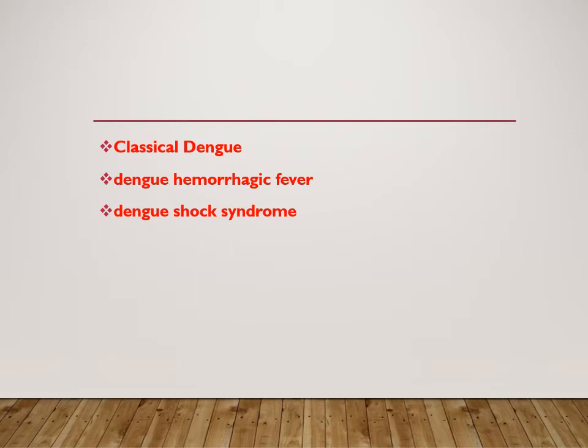In dengue hemorrhagic fever, the patient has high-grade fever, platelet count less than 1 lakh per mm³, hepatomegaly, and a raised hematocrit value — raised by more than 20 percent. There will be manifestations of hemorrhage, such as spontaneous bleeding from the nose, mouth, or gums, or a positive tourniquet test — more than 20 petechiae per square inch in the area of the cubital fossa.